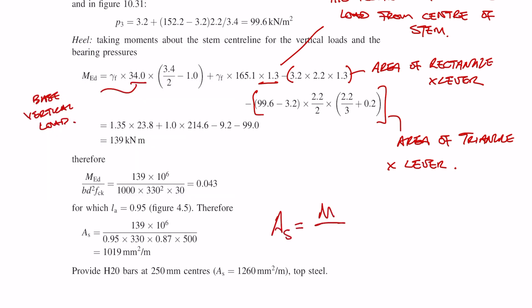Like with the stem, once we've got the bending moment and once we've calculated the effective depth we can calculate the area of steel required and then provide the adequate amount of reinforcement. In this case we're providing H20s at 250mm centers.